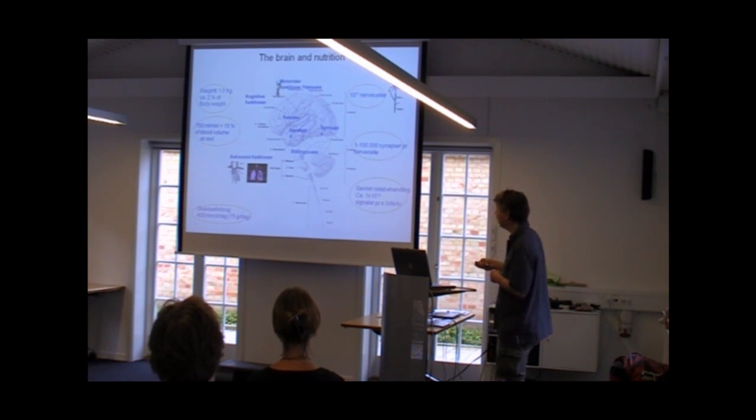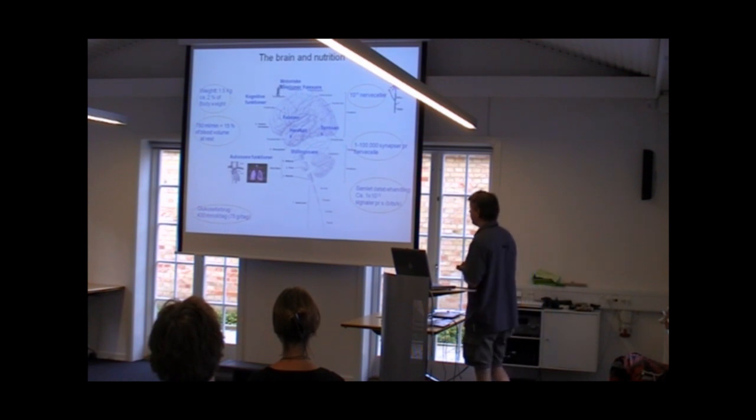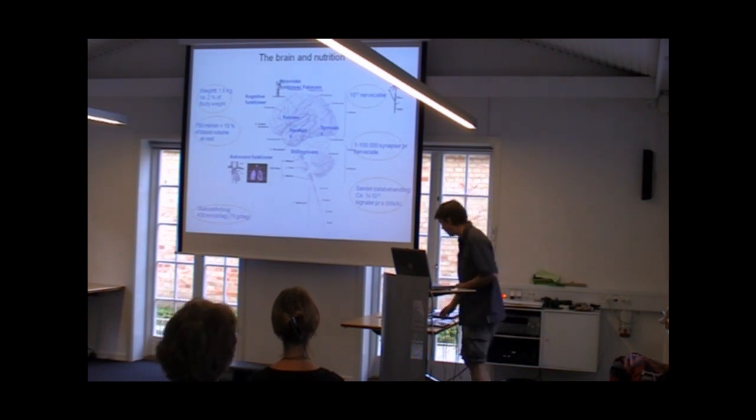It eats quite a lot of sugar, so it eats about 75 grams of glucose every day, and that's all in order to have all of these neurons do what they do. And of course, all the glia cells, which I shouldn't forget.